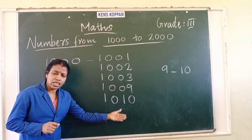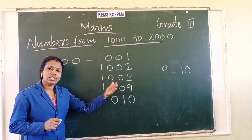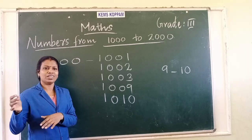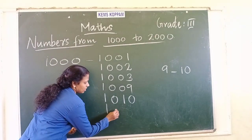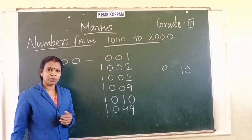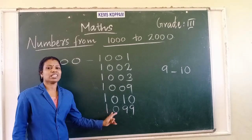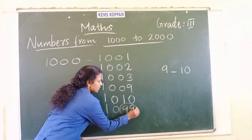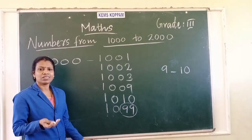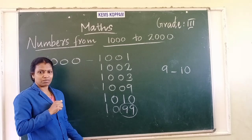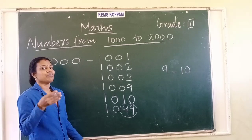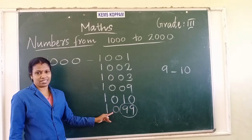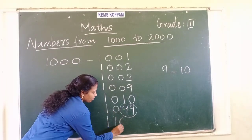The next numbers: 1,011; 1,012; 1,013. Numbers keep going. Then what comes after 1,099? After 99, 100 comes. So we change three places — 1s, 10s, and 100s — and it becomes 1,100.